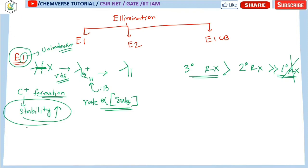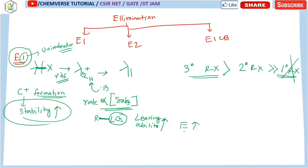Another important point is that here with R-X, or R-leaving group, this bond is getting cleaved. If the leaving ability of this group increases, that will increase the rate of the E1 elimination reaction.